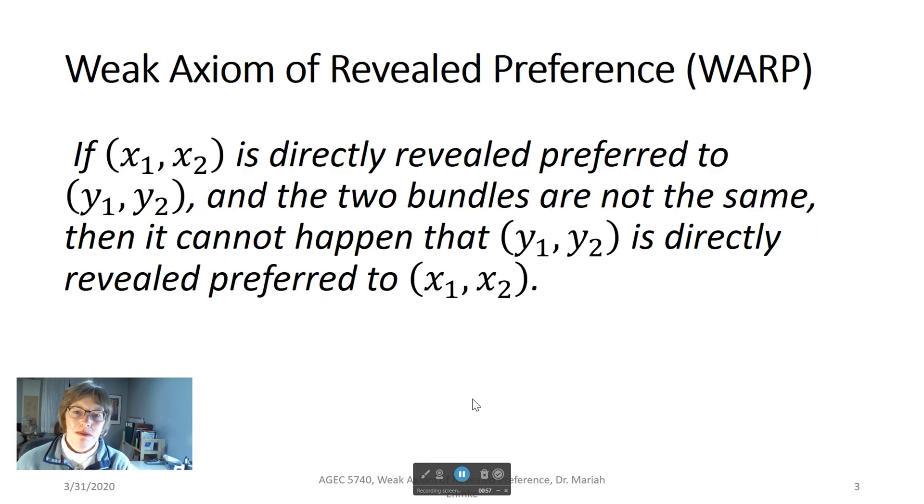Economists have developed the weak axiom of revealed preference, or WARP, to test when consumers are fully revealing their preferences. Here is the WARP definition: If a set of goods X1 and X2 is directly revealed preferred to another set, say Y1 and Y2, and the two bundles are not the same, then it cannot happen that Y1, Y2 is directly revealed preferred to X1 and X2.